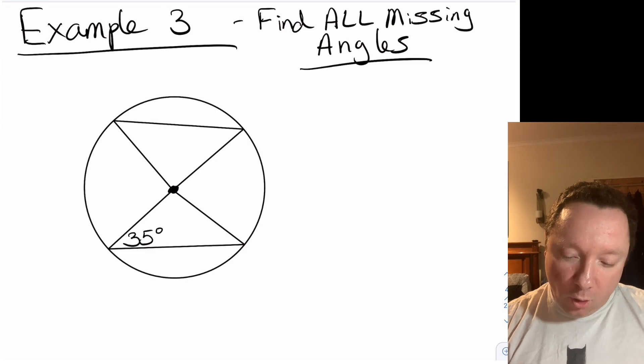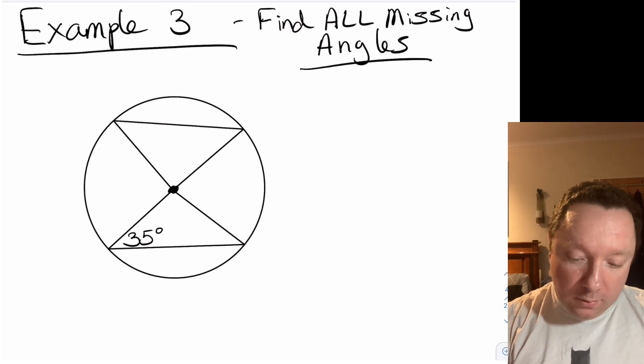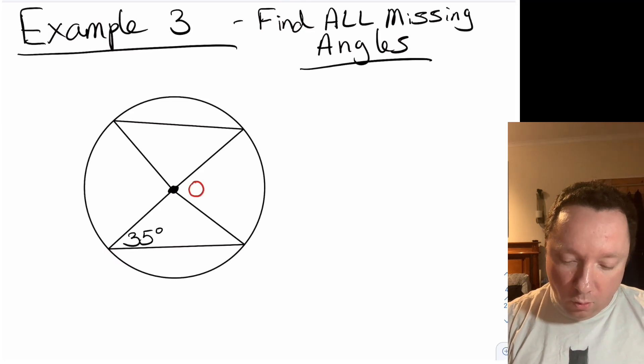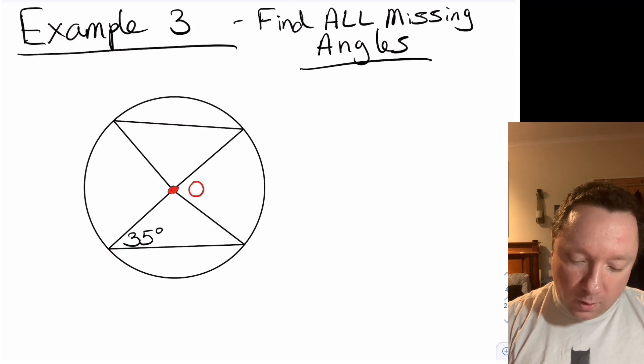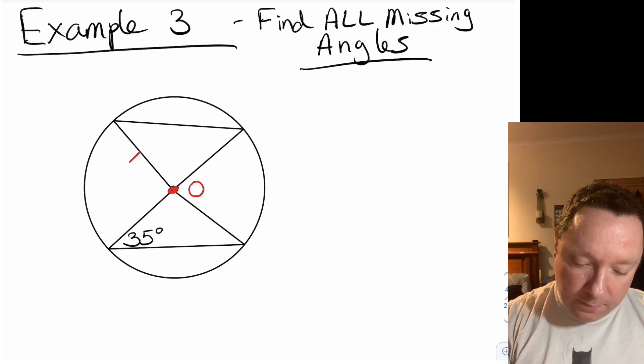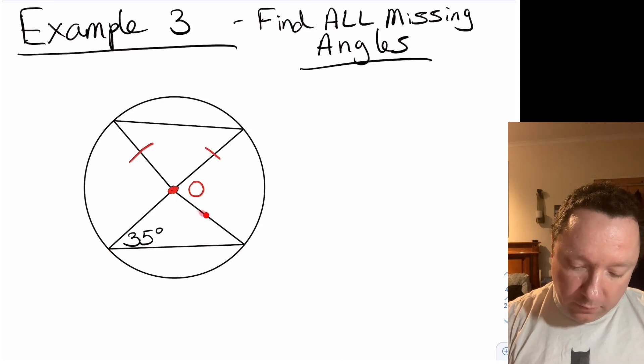Example three. Find all the missing angles and I'm only given one. So let's always start in the same way: identify our center of our circle, call it O. That's right here. Identify our radiuses, there's one and there's another one, so they're the same. We've got more down here, there's one and there's another one.